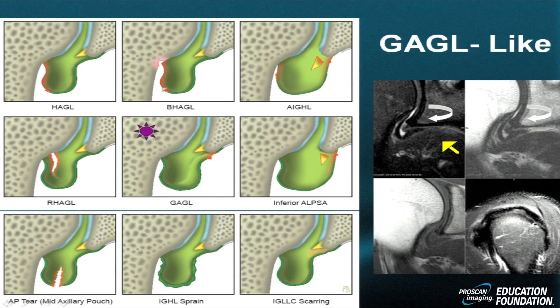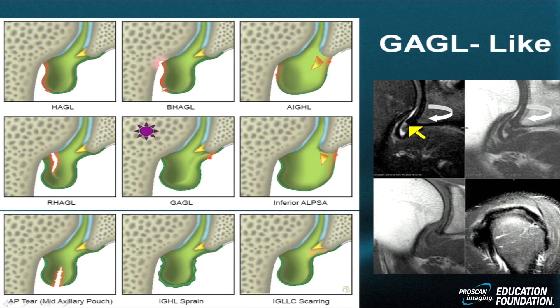Look to the right and you'll see a GAGL-like lesion. There is preservation of the neck attachment of the inferior glenohumeral ligament. But as we move over to the glenoid side, there is detachment — with one caveat: the labrum is also involved. The labrum is ever so slightly separated from the adjacent cartilage, making it a GAGL-like lesion. Remember, in a GAGL the labrum is allowed to swell, but it shouldn't displace.